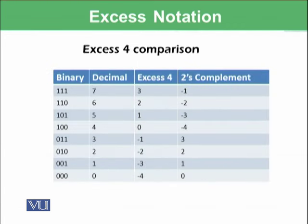Here I have made a comparison of excess 4 notation for binary, decimal, excess 4 and in 2's complement. You can see that 111 is represented in decimal as 7. In excess notation, it is giving 3 and in 2's complement, it is giving minus 1.